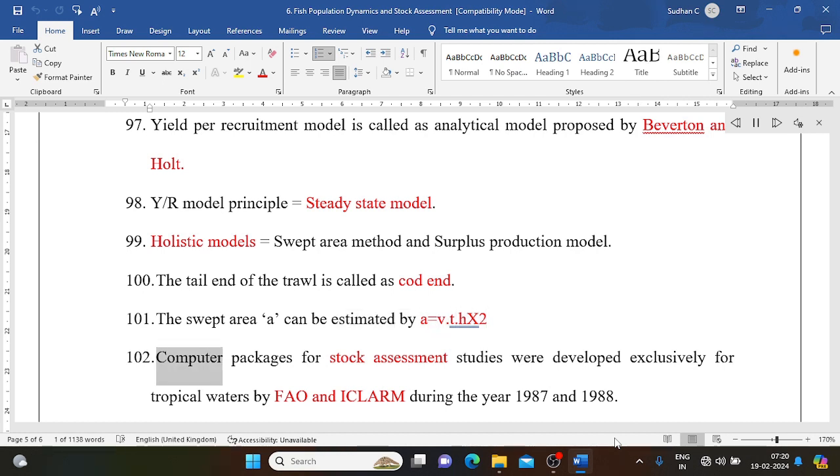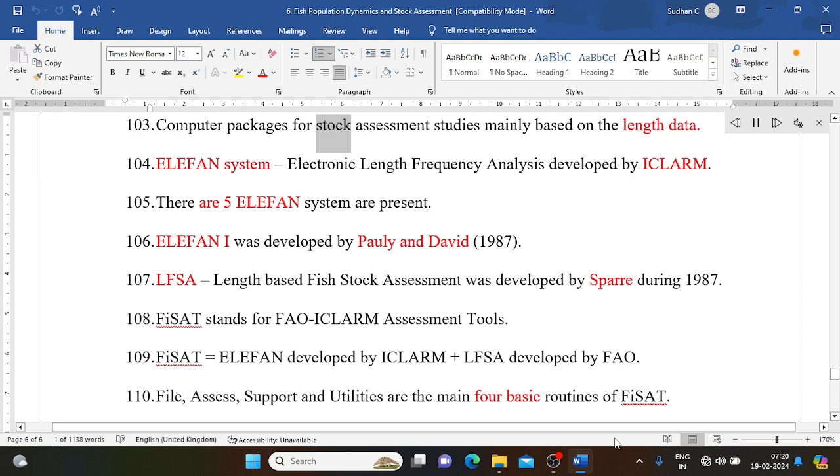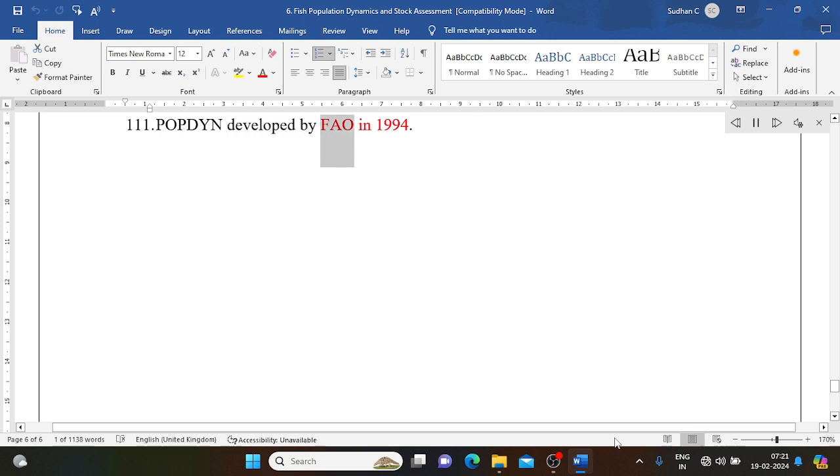Computer packages for stock assessment studies were developed exclusively for tropical waters by FAO and ICLARM during the year 1987 and 1988. Computer packages for stock assessment studies mainly based on the length data: ELEFAN system (Electronic Length Frequency Analysis) developed by ICLARM. There are five ELEFAN systems present. ELEFAN I was developed by Pauly and David 1987. LFSA (Length-Based Fish Stock Assessment) was developed by Sparre during 1987. FiSAT stands for FAO-ICLARM Stock Assessment Tools. FiSAT equals ELEFAN developed by ICLARM plus LFSA developed by FAO. File, Assess, Support, and Utilities are the main four basic routines of FiSAT. POPDEN developed by FAO in 1994.